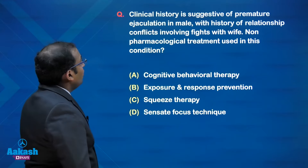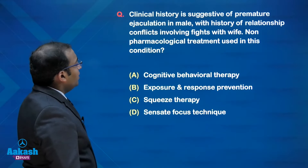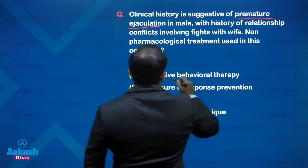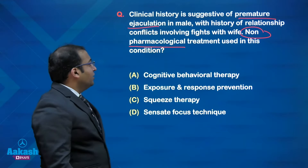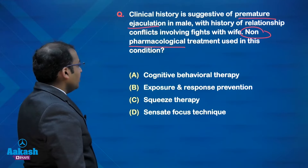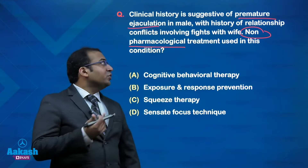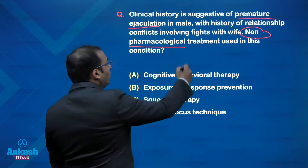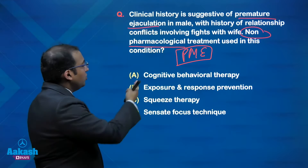The third question describes a male patient with a history of premature ejaculation and relationship conflicts with his wife, asking about the non-pharmacological treatment for this condition. The options are: cognitive behavior therapy, exposure and response prevention, squeeze therapy, and sensate focus technique. This is a tougher question because you need to know each of these techniques specifically to arrive at the correct answer.